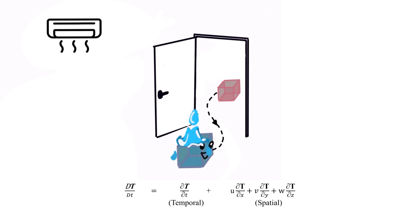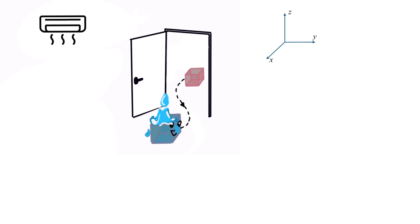The left-hand side of the equation is the notation of the substantial derivative for temperature of the moving parcel. Now, let's look into its mathematical derivation.